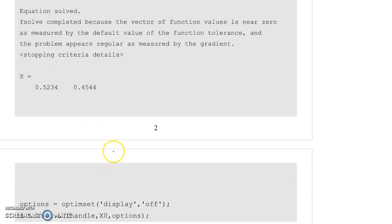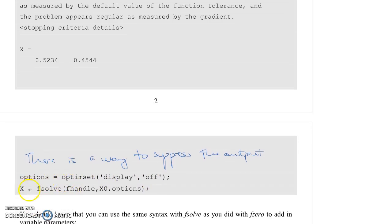Now, if you don't want all of this output to be shown on the screen, there is a way to suppress the output. And the way to do that is to define some variable, which here I call it options, you can call it whatever you want, equals to, and then you call this function, optimset, and then say, in quotes, display, comma, again, in quotes, off. So, what that does is it tells fsolve, if you make the call to fsolve this way with a third variable, options, it tells fsolve to not make that kind of output.